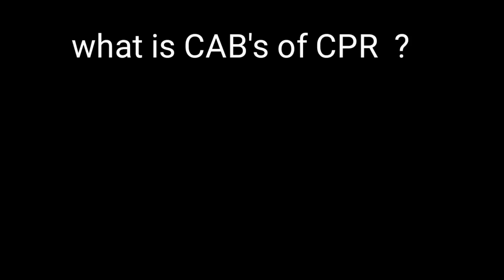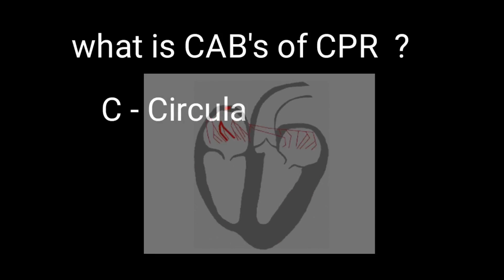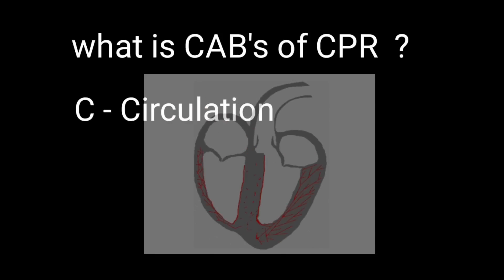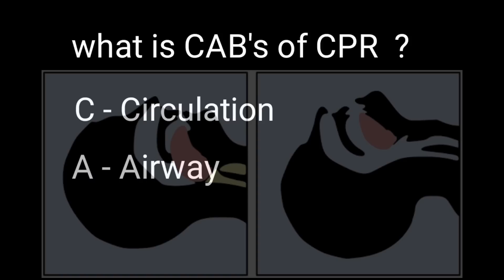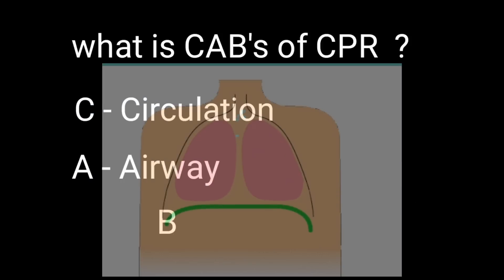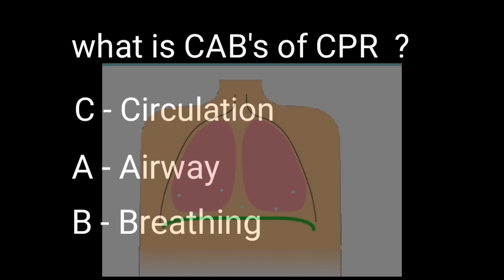What is CAB of CPR? C is for circulation. A is for airway. B is for breathing.